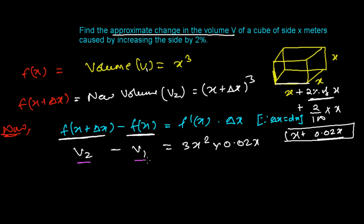So now this V₂ minus V₁, you can write as difference in V, difference in volume, or you can say change in volume. That's 3 times 0.02, that's 0.06, and x into x, that's x³.